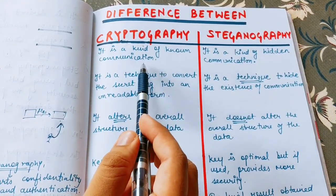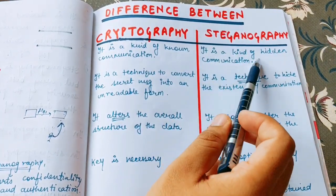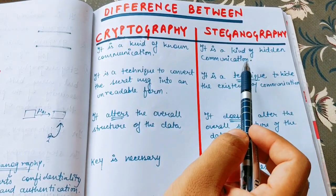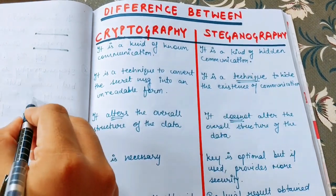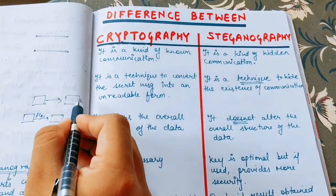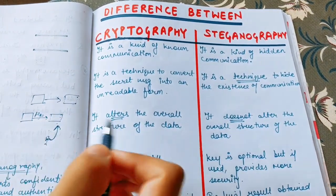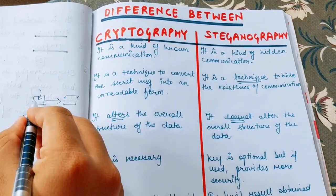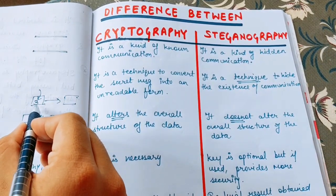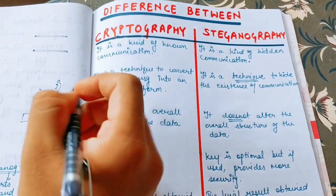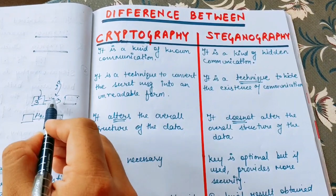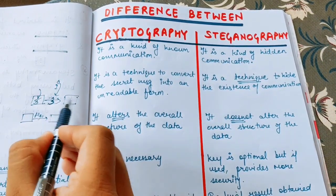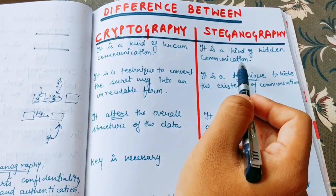In steganography, it is a kind of hidden communication. For example, if I have an image and I'm sending it to my friend, I embed a secret message into that image, but the look and feel — the outer appearance of the image — will not change. If the image had a '3' written on it, the attacker will only see an image with '3' on it. He will not be able to know that some special data is being sent from person A to person B. This is the basic idea of hidden communication.